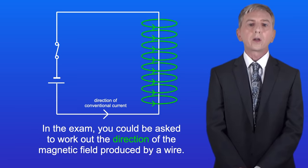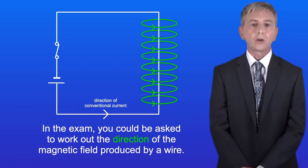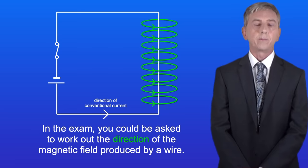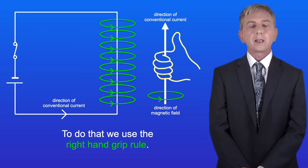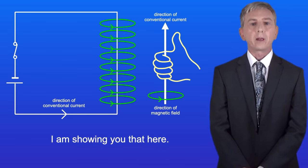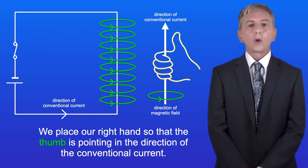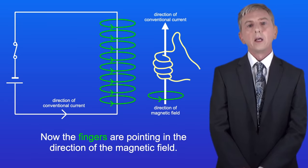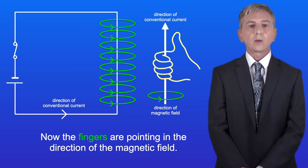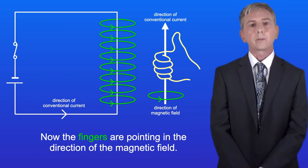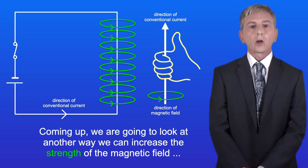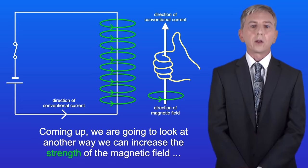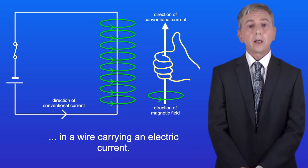In the exam you could be asked to work out the direction of the magnetic field produced by a wire. To do that we use the right hand grip rule. We place our right hand so that the thumb is pointing in the direction of the conventional current. The fingers are then pointing in the direction of the magnetic field. Coming up we're going to look at another way we can increase the strength of the magnetic field in a wire carrying an electric current.